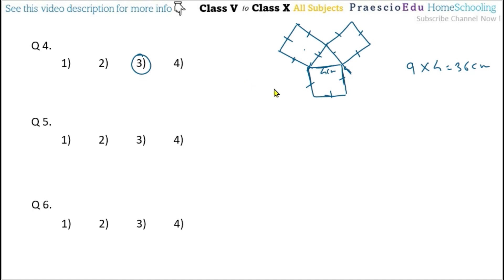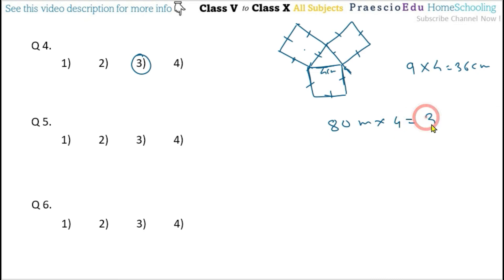Deepika covered one round of the square garden, so 80 meters × 4 = 320 meters.